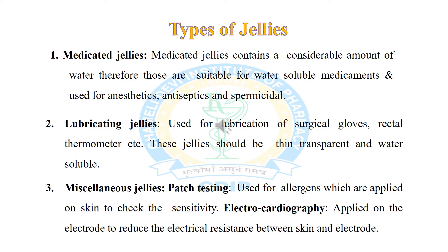Lubricating jellies are used for lubrication of surgical gloves, rectal thermometers, etc. These jellies should be thin, transparent, and water-soluble. They should also be sterile because they are used as lubricants for articles inserted into a sterile region of the body, such as a rectal thermometer used in the rectum and urinary bladder.